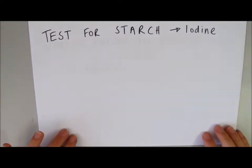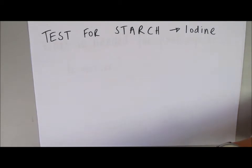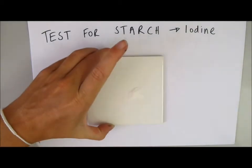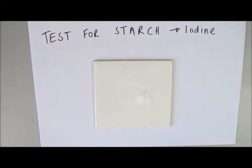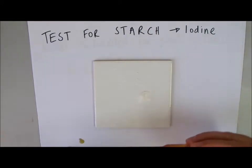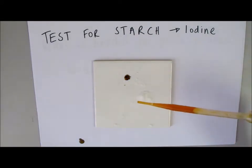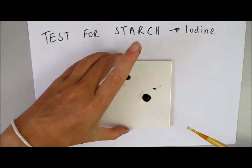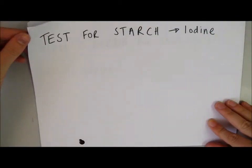And, obviously, we do that using the iodine test. So, on this white tile, I've got some starch, and in my pipette, I've got some iodine, and you can see straight away, as soon as I add iodine to the starch, you get this deep blue-black colour showing us that starch is present. So, that's what we're going to test for and why we're going to test for starch.